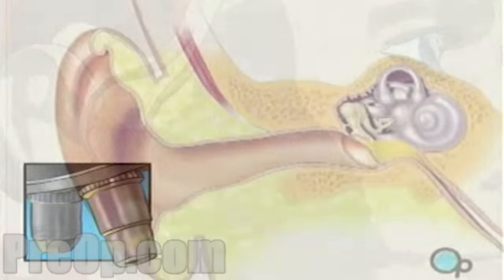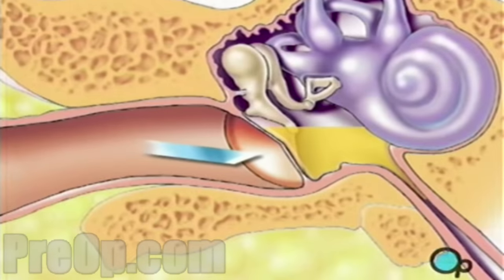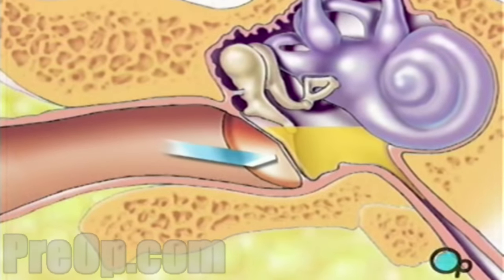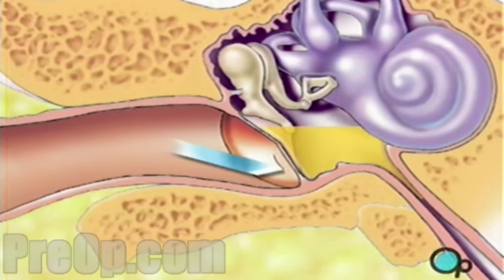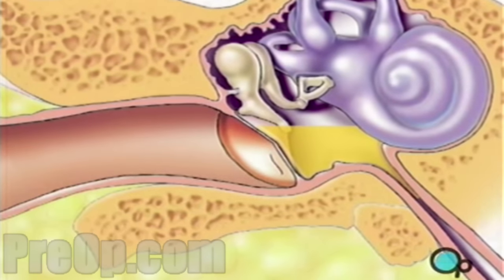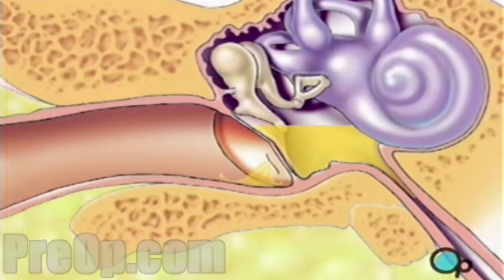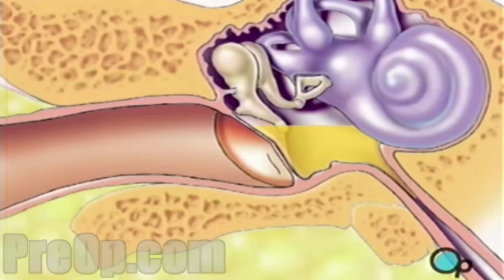When the operative field is numb, the surgeon will use the microscope to help make a very small incision in the lower part of the eardrum so that the fluid can drain harmlessly away.